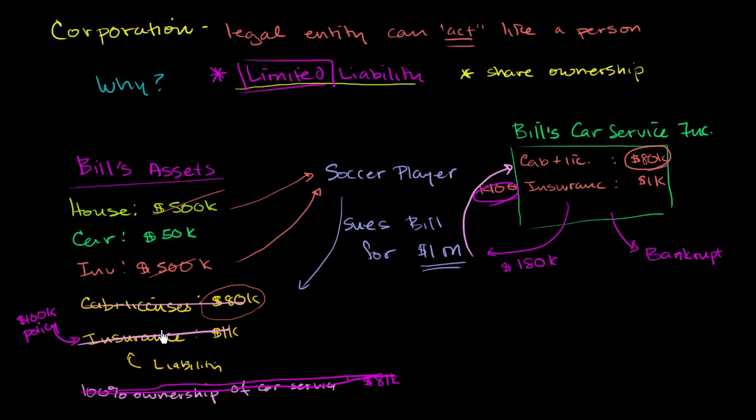If Bill had owned the cab himself and got sued, the soccer player, whose career was ruined, would have gotten his actual million dollars. But because Bill set up this corporation and put the assets of the cab company in this corporation, he was able to limit his liability. The soccer player was only able to get $180,000. The corporation declared bankruptcy, but Bill's liability was limited to what he had contributed to the corporation.